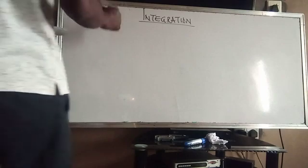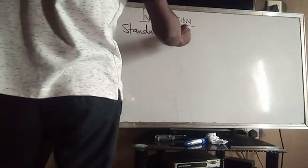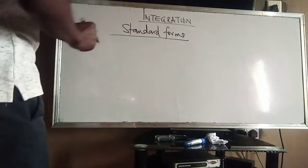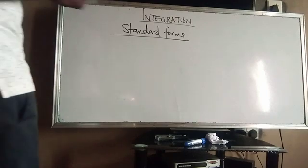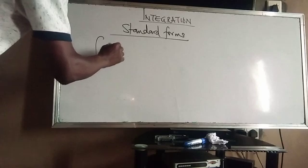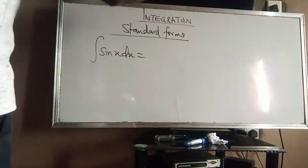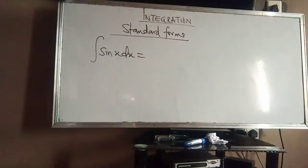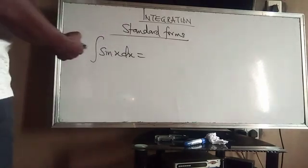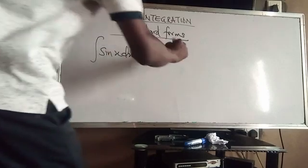We start with the standard forms — forms that, by way of research, have given us a certain degree of relevance and unique forms. We start with sin x. If you integrate sin x dx, you observe that when we get f of x, it was as a result of the integral of g(x) dx. So the rate of change of the function given must be there. The integral of sin x dx would be minus cos x plus C.